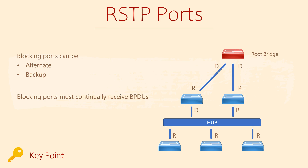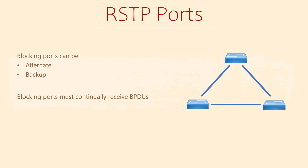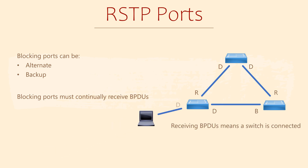Any type of blocking port will block regular traffic, but still allow BPDUs. In fact, a port must be receiving BPDUs to be in a blocking state. You might wonder why this is the case. Remember that all switches send BPDUs to their neighbours. If a port is not receiving BPDUs, then it is not connected to another switch. It's probably connected to something like a PC, a printer, a server or some other end device. We can't create loops on interfaces connected to these devices, so these ports do not need to be blocking.